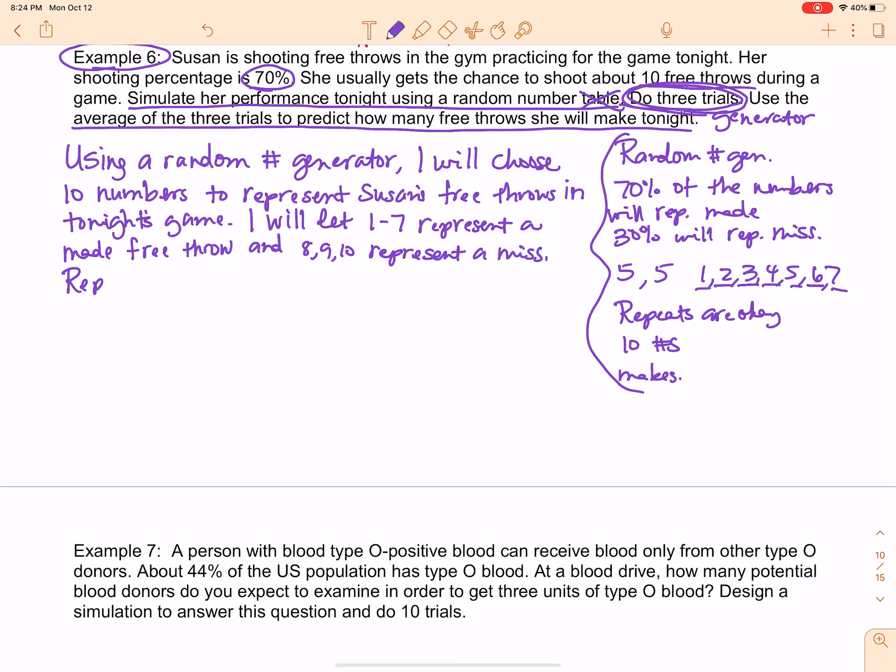Repeats will be counted. You can write repeats will be allowed, repeats will be counted, repeats are okay, all of that stuff means the same thing. So repeats will be counted, and we will record how many she makes. Those are the directions and now we're going to carry out the trials. The directions and the trials are completely separate because these directions are good for every single individual trial I'm going to look at.